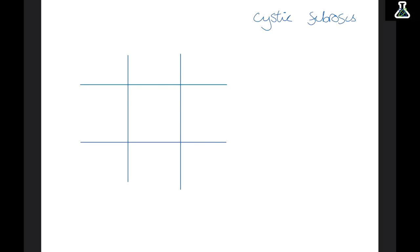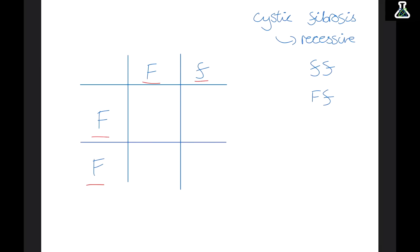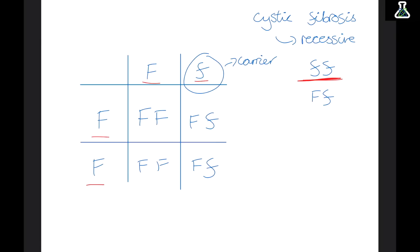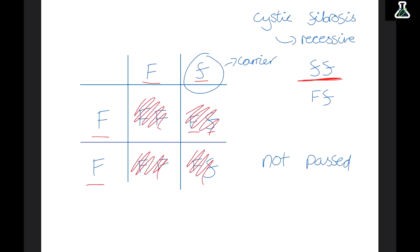Cystic fibrosis is a recessive disease, so people with two recessive alleles will have it. If the first person has a dominant and a recessive allele and the second person has two dominant alleles, we fill out the Punnett square. To show the disease, we need someone who is homozygous recessive — two recessive alleles. Looking at the results: the first has two dominant, the second has dominant and recessive, the third has dominant and recessive, and the fourth has dominant and recessive — so the disease is not passed on. However, the carrier parent does carry the disease because they have a recessive allele.